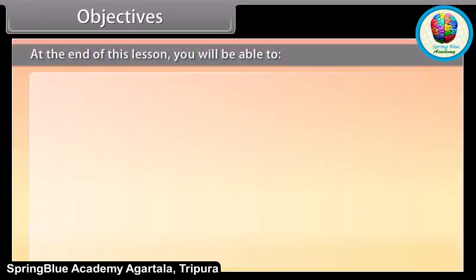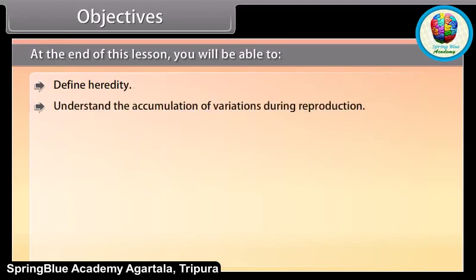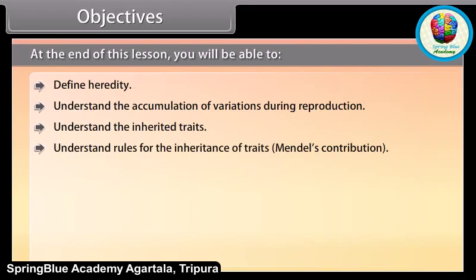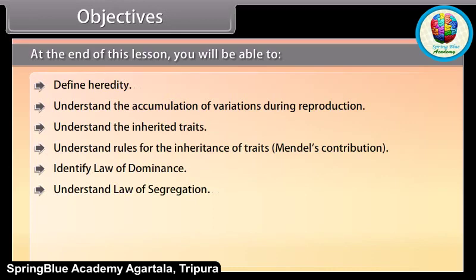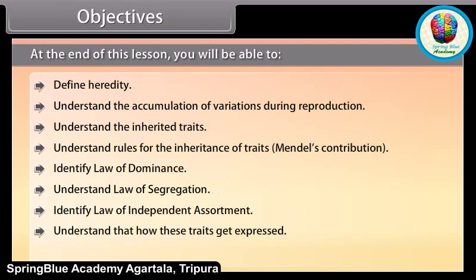Objectives. At the end of this lesson, you'll be able to: define heredity, understand the accumulation of variations during reproduction, understand the inherited traits, understand rules for the inheritance of traits and Mendel's contribution, identify the law of dominance, understand the law of segregation, identify the law of independent assortment, understand how these traits get expressed, and understand the process of sex determination.